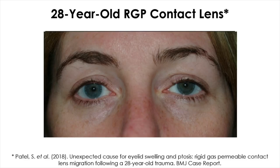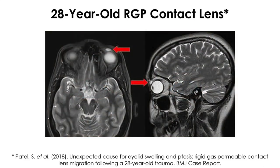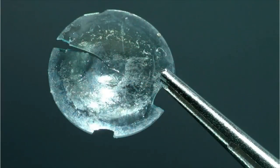The MRI scan showed a nodular lesion associated with surrounding soft tissue swelling. They decided to do surgery, and they found a cyst — a sac filled with fluid — within the soft tissue, superior to the superior fornix. In the middle of the surgery, the cyst ruptured, and they found a heart-shaped contact lens, later confirmed to be a rigid gas permeable lens, or RGP lens.